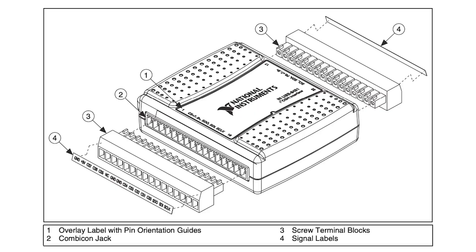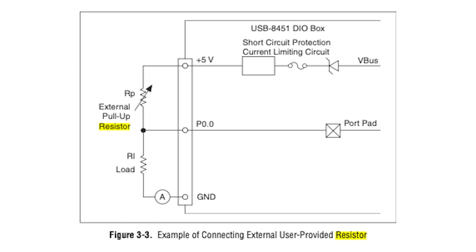The default configuration of the DIO port is push-pull, allowing 3.3-volt operations. To achieve 5-volt operation, change the output driver type to open drain and add an external pull-up resistor. Do not use a pull-up resistor of less than 1 kOhm. All samples of digital input lines and updates of digital output lines are software-timed.